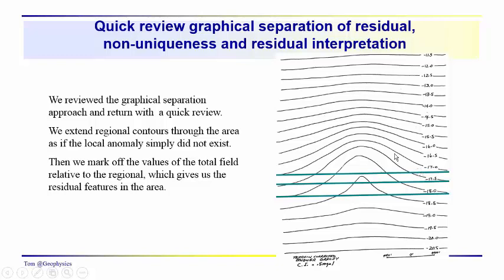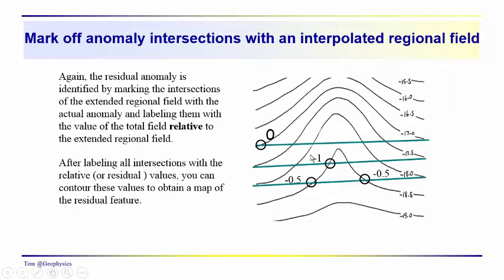This would be our regional field and we would just see kind of a stair ladder of lines going through the area. We just indicated that we can separate the residual from the regional by taking this set of regional lines and then looking at the relative value of the contoured total anomaly relative to what we're assuming to be the background or the underlying regional field.